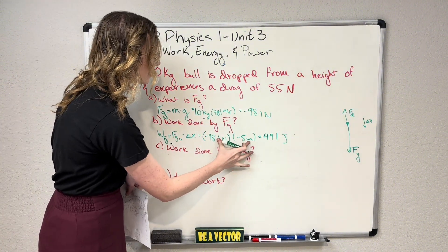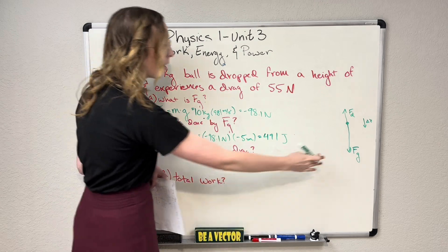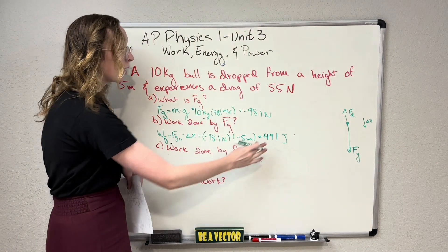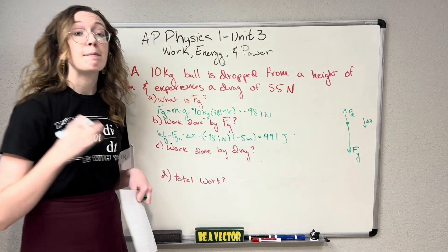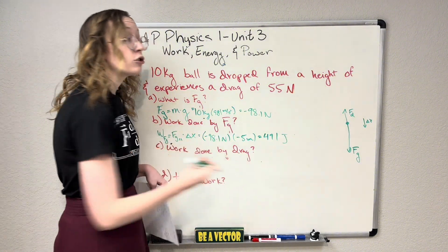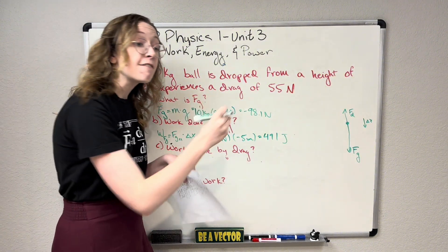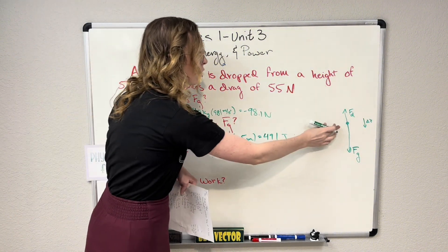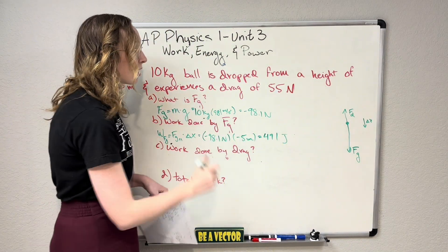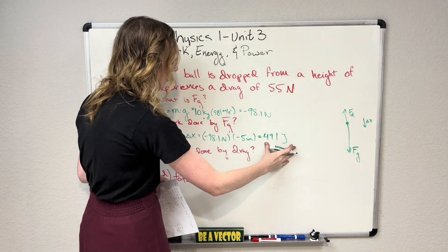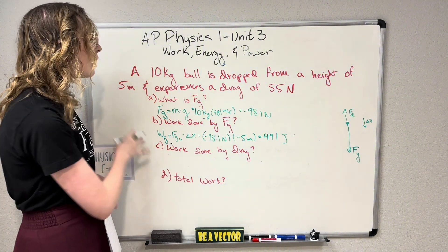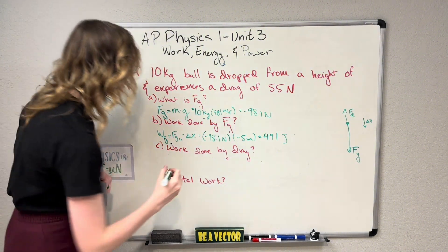Because this work value is positive — a negative times a negative — my force was pulling in the same direction that my object was moving. Positive work means that the force due to gravity is giving energy to my cannonball. The object is gaining energy because of the force due to gravity. That's what work means.